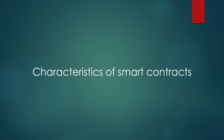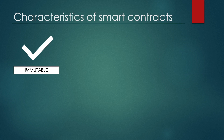Now let's look at some characteristics of smart contracts. Smart contracts are immutable. When they are released to the network, they can no longer be modified. Once deployed, they can only be removed, as long as this particular function has been implemented previously.